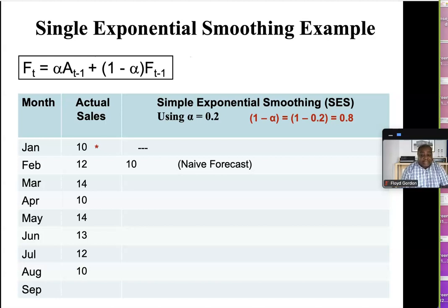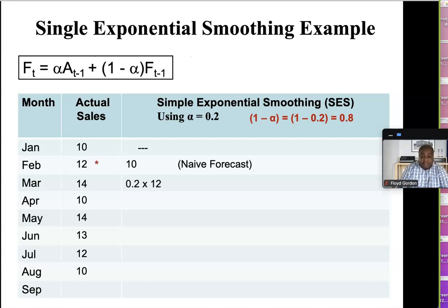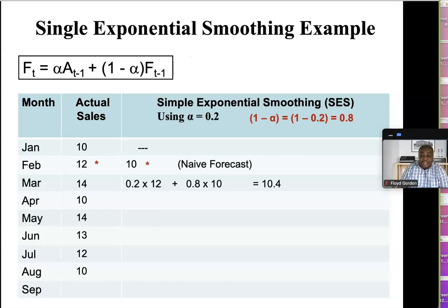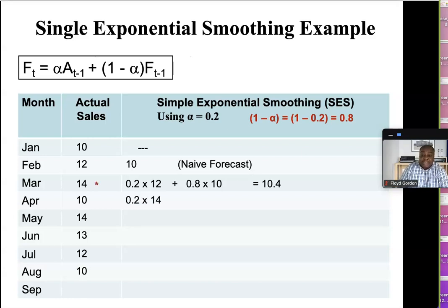Moving on to March: the forecast is equal to alpha (0.2) multiplied by the actual result from the previous month February, so 0.2 times 12, plus one minus alpha (0.8) times the forecast for the previous month, which is 10. That works out to 10.4 — our forecast for March. For April: 0.2 times the actual 14, plus 0.8 times the previous forecast 10.4, which works out to 11.12. I'm working with two decimal places throughout.